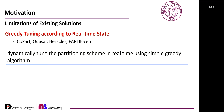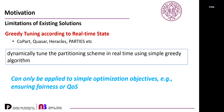The second category, which we call greedy tuning according to real-time state, includes works like GroupPart, QuasiHerocodes, and PARTIES. The basic idea is to dynamically tune the partitioning scheme in real-time using simple greedy approaches. However, it can only be applied to simple optimization objectives, such as ensuring fairness among applications or QoS, and cannot be applied to optimizing complex objectives such as system throughput, because it lacks a performance model to quantify performance interference.